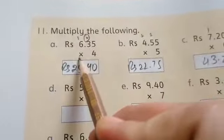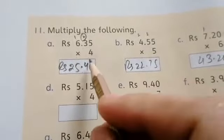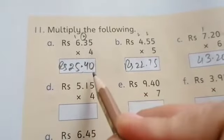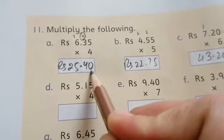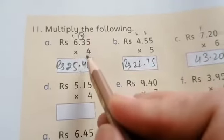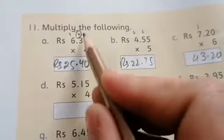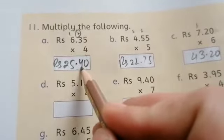Question number 11. Multiply the following. Rupees 6.35 multiply by 4. How we will multiply? 4 times 5 is 20. We will write 0. First number here, the second on the top. 4 times 3 is 12. Plus 2 is 14. 4 here, 1 here.